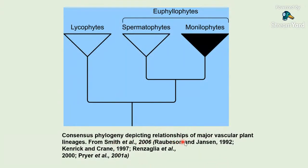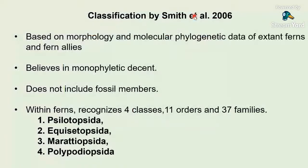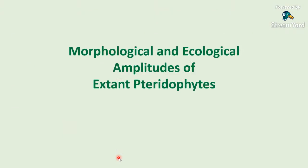This consensus phylogeny depicts the relationship of major vascular plant lineages, where lycophytes have been separated and the rest of the pteridophytes — referred to as monilophytes — along with spermatophytes are included in euphyllophytes. In the latest classification by Smith and Associates in 2006, based on morphology and molecular phylogenetic data of extant ferns and fern allies, believing in monophyletic descent, ferns are divided into 4 classes, 11 orders, and 37 families: Psilotopsida, Equisetopsida, Marattiopsida, and Polypodiopsida.